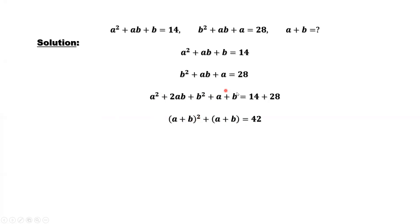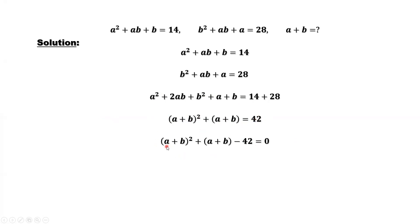The second part, that's a plus b, equals 42. Move 42 to the left-hand side. We have a quadratic equation. We can consider a plus b as one variable. This is what we want to find.